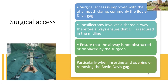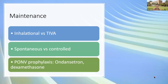Maintenance can be TIVA or inhalational, but TIVA has the advantage of reduced incidence of PONV. Postoperative nausea and vomiting is a common complaint after adenotonsillectomy, so TIVA provides smooth emergence and decreases PONV. Maintenance can be spontaneous or controlled ventilation — spontaneous ventilation is generally used only with LMA, while controlled ventilation is preferred with the endotracheal tube. PONV prophylaxis using ondansetron and dexamethasone is an important aspect of this surgery.